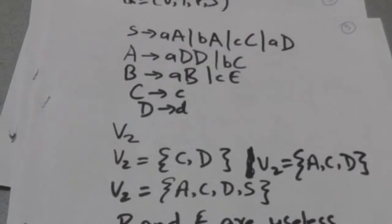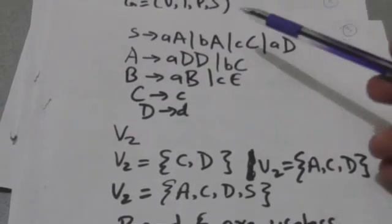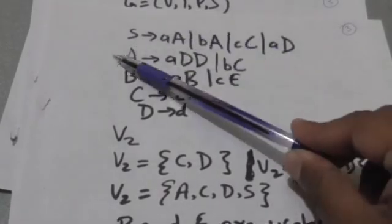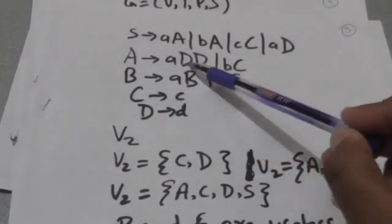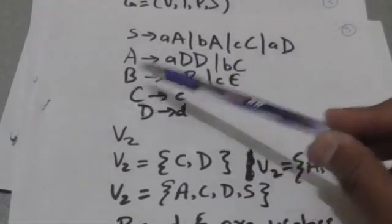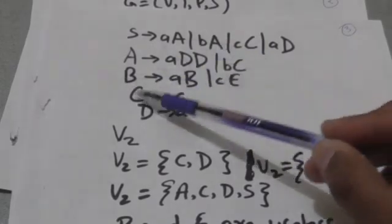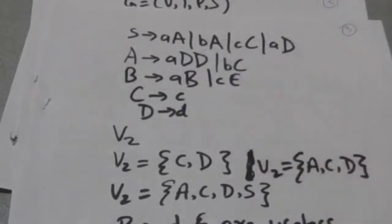Suppose there is a grammar G whose productions are: S derives aa, S derives ba, S derives cc, S derives ad, A derives add, A derives bc, B derives ab, B derives ce, C derives c, D derives d.